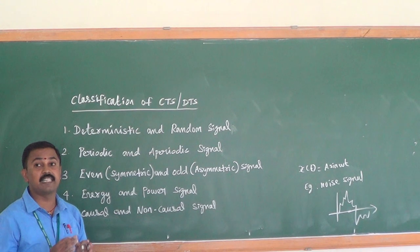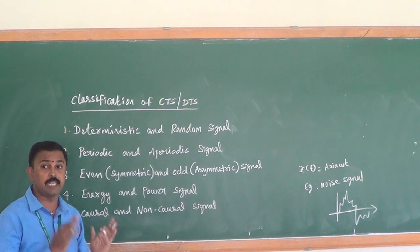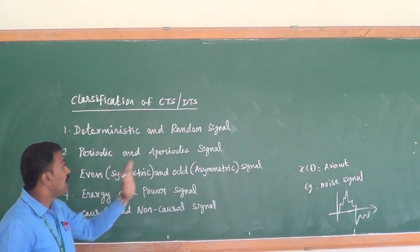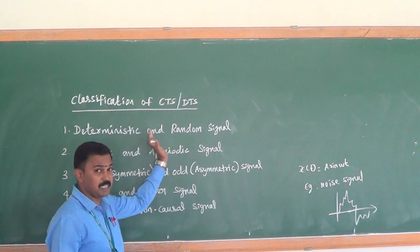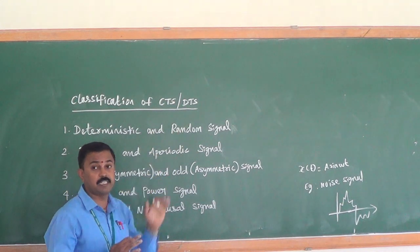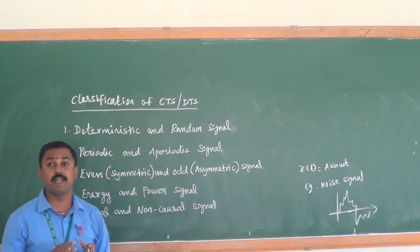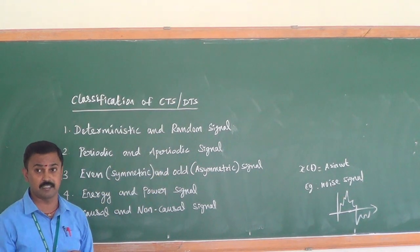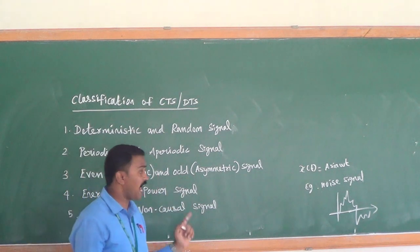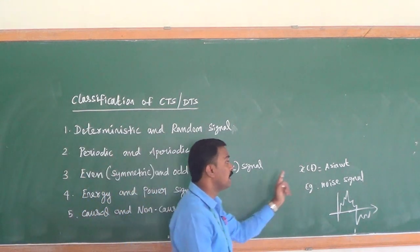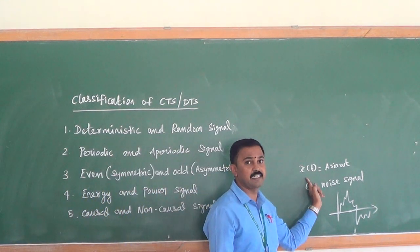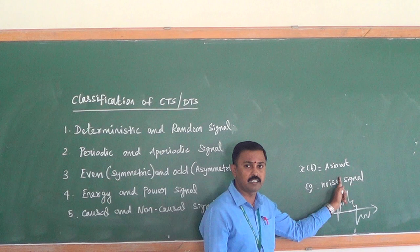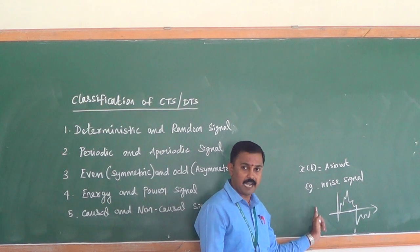To summarize: a deterministic signal can be represented by any mathematical equation, while a random signal cannot be represented by any mathematical equation. That is the key distinction between deterministic and random signals.